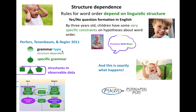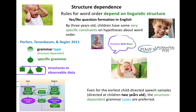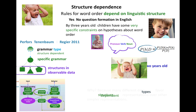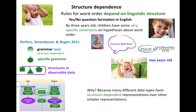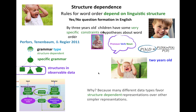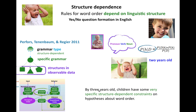This is exactly what happens given the data in child-directed speech: the grammar type that's inferred is structure-dependent. Even for the earliest child-directed speech samples directed at children two years old, the structure-dependent grammar types are preferred. Why is this? Because many different data types favor structure-dependent representations — you're getting a lot of stuff favoring that kind of grammar type from many other properties and examples in the language, even if they aren't yes-no questions. This could explain why, for yes-no questions and other things, by three years old children have some very specific structure-dependent constraints on their hypotheses about word order.